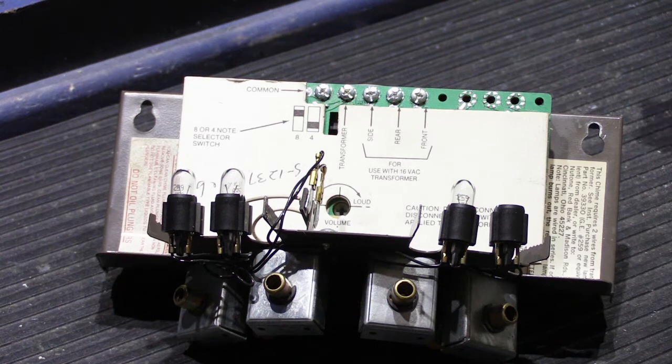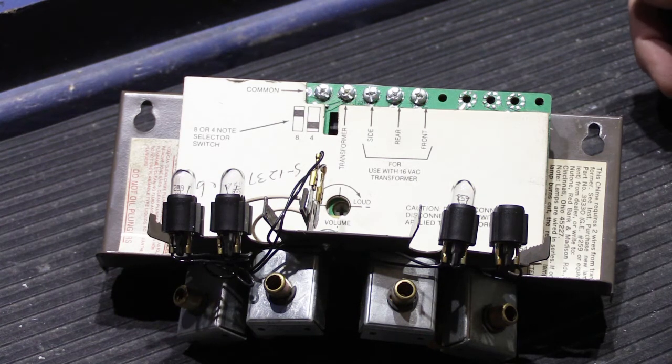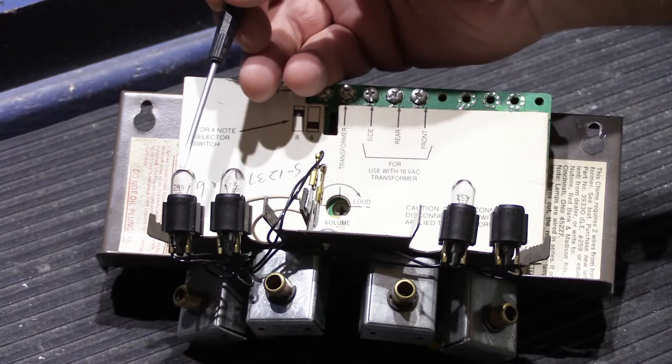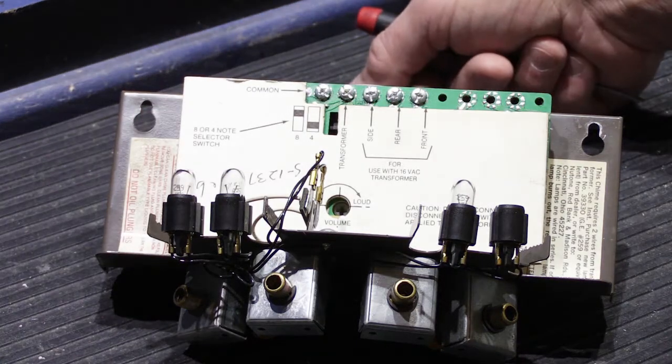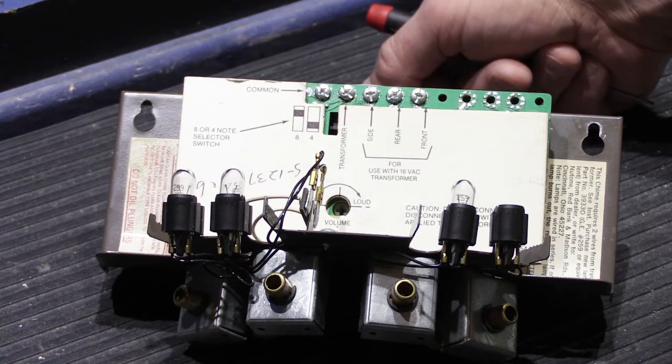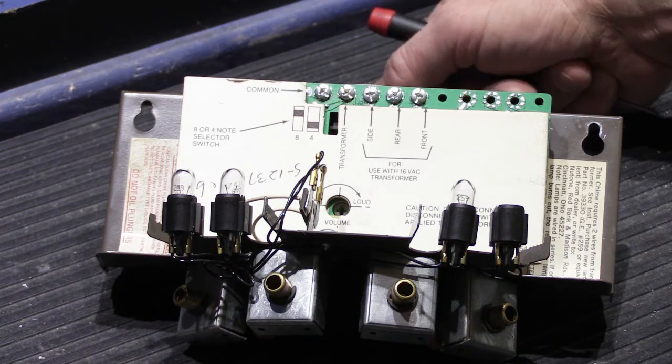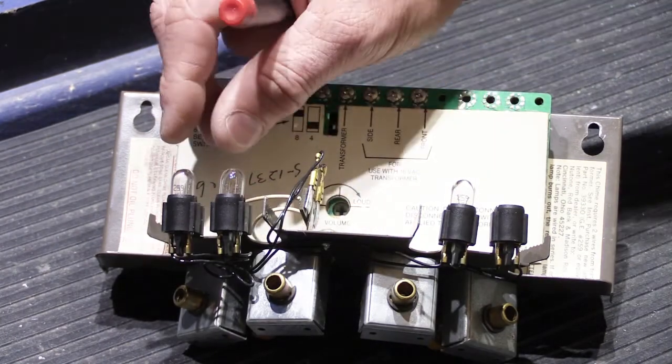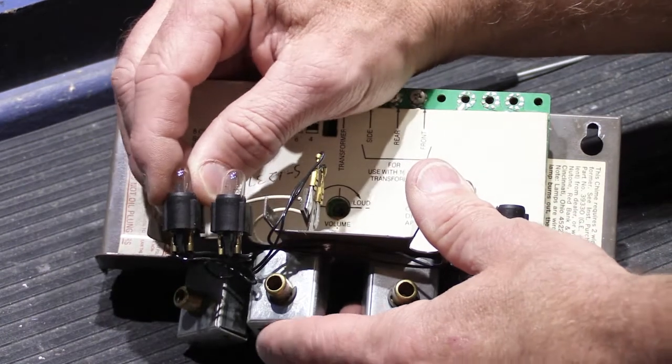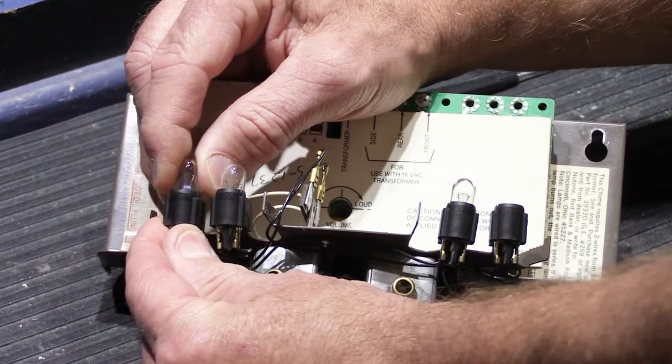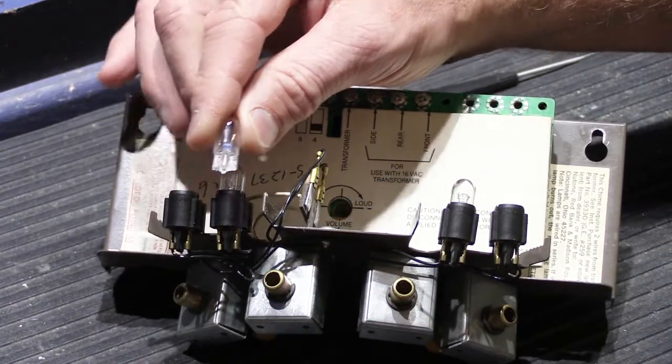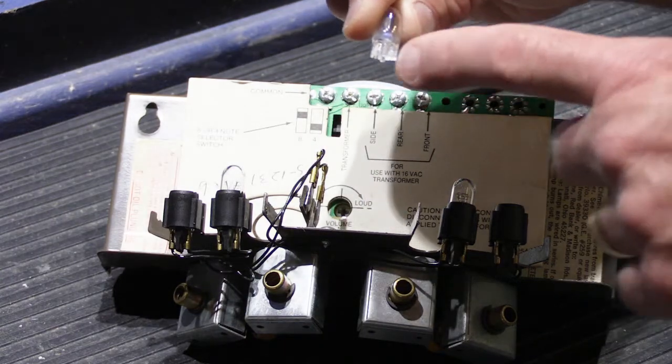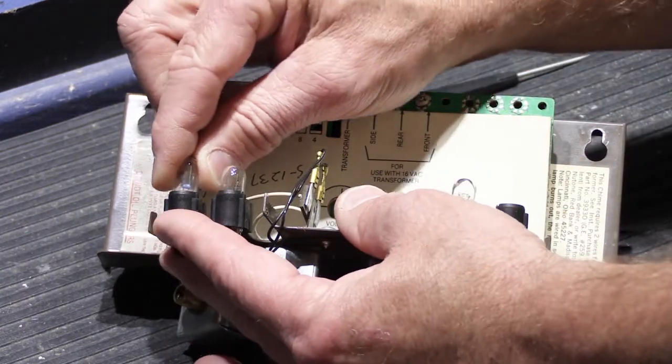One of the things I'll point out, since we're talking about light bulbs, is all NuTone chimes that have the wedge type bulbs, which I would say start in the late 1970s or so, they're all miniature bulb number 259s. They're called a wedge style bulb—not threaded and not bayonet mount. They're just a little wedgy end of glass with the leads bent over and they push into the sockets.